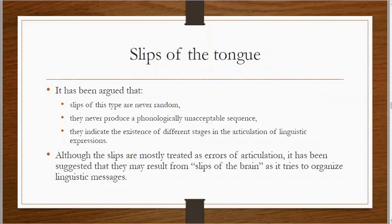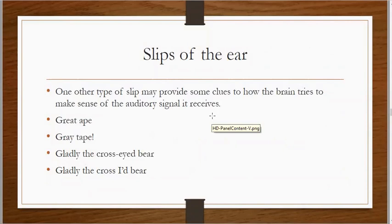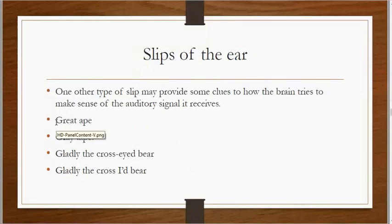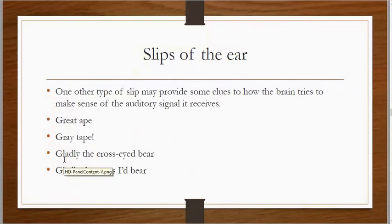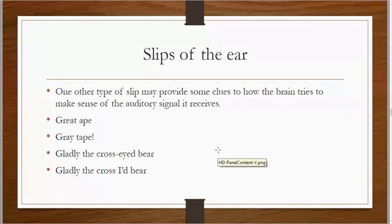After slip of the tongue, we also have slip of the ear — whenever we hear a word, we may not be able to recognize what was actually said. For example, if I say 'creative,' you might hear it as 'great ape' or 'gray tape.' Similarly, 'gladly the cross-eyed bear' might be misheard. Or when I say 'gray day,' some would take it as 'grade A' and others as 'gray day.' This is the slip of the ear phenomenon.